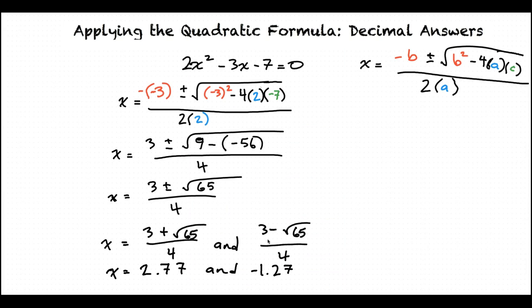And doing the same thing for (3 - √65) / 4, we'll get -1.27. So that's how we use a calculator to get our decimal answers for a quadratic equation.